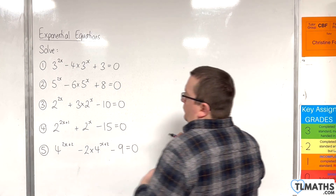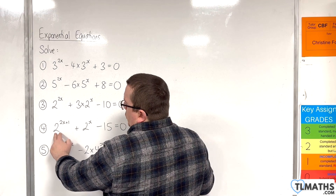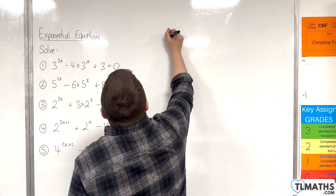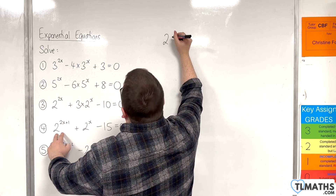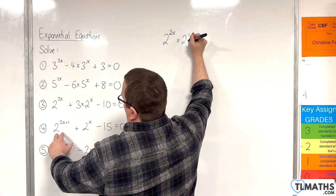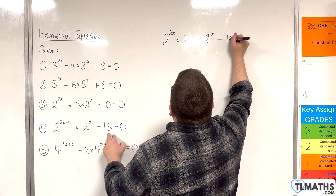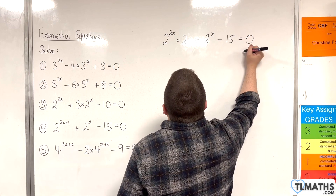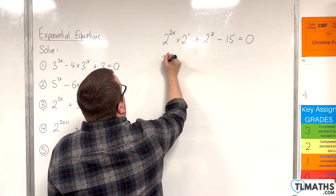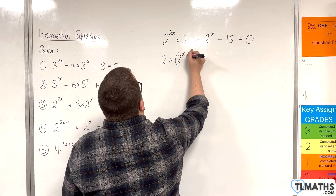Number 4 is a little bit different. Here we have 2 to the 2x plus 1. I'm going to write 2 to the 2x plus 1 as 2 to the 2x times 2 to the 1. Together with the 2 to the x term, take away 15 equals 0. Reversing the order of terms, we get 2 lots of — and 2 to the 2x is 2 to the x, all squared.